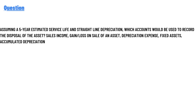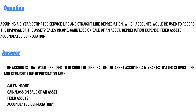The correct answer is: the accounts that would be used to record the disposal of the asset, assuming a five-year estimated service life and straight-line depreciation, are gain or loss on sales of an asset, fixed asset, and accumulated depreciation.